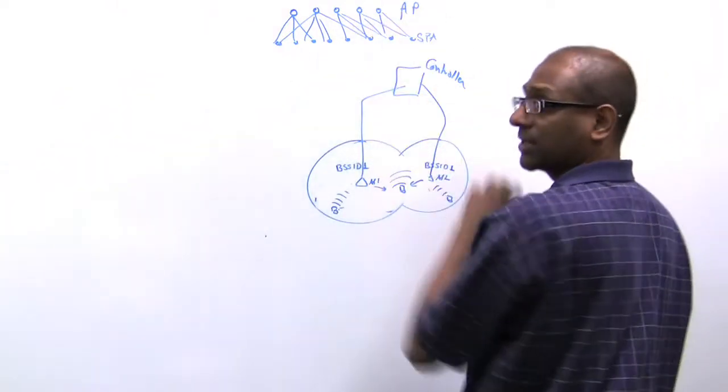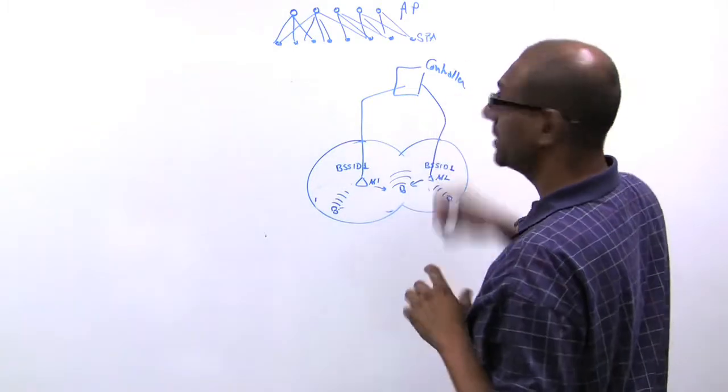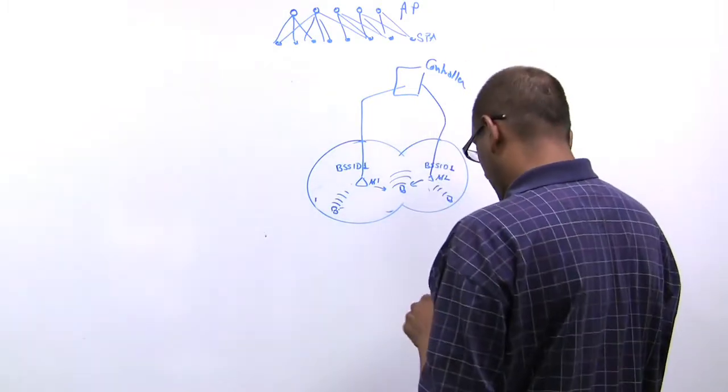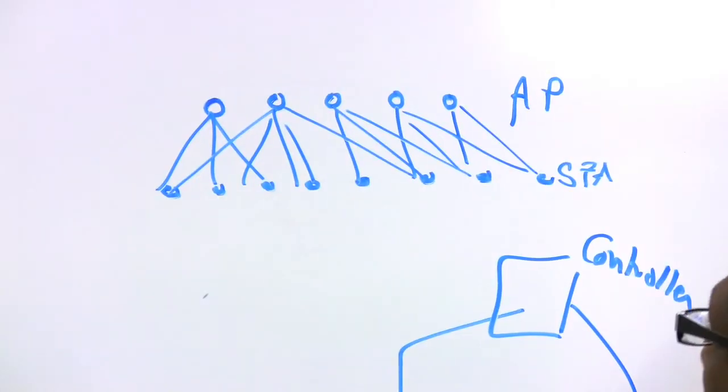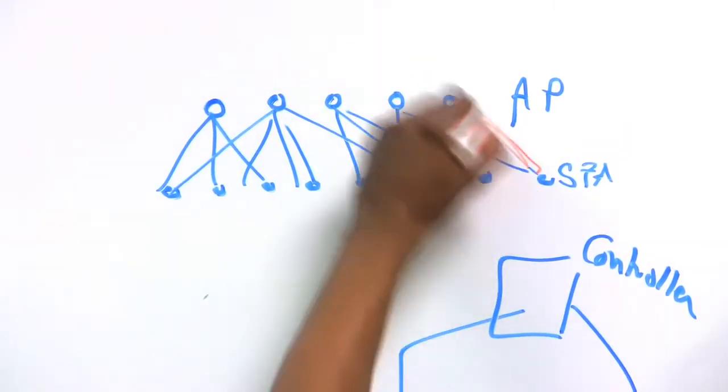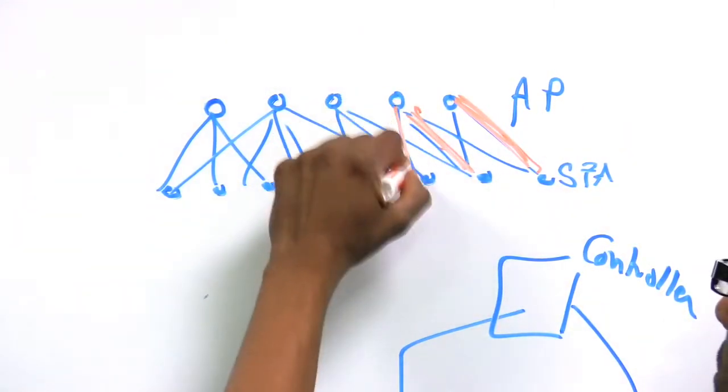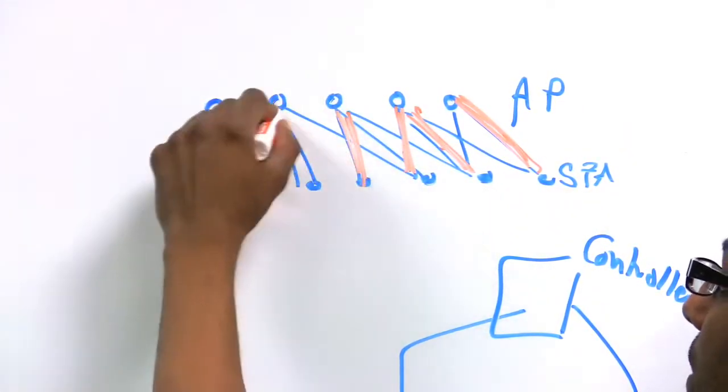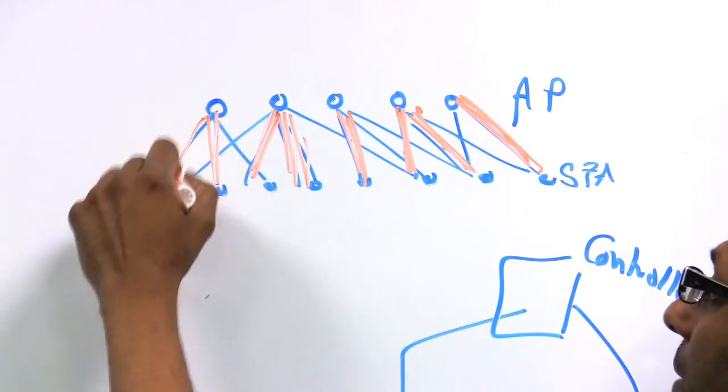Now based on this graph, the controller can decide globally which is the optimal assignment to make. So in fact, what the controller does is it says this station is assigned to this AP, this station to this AP, this station to this AP, etc.